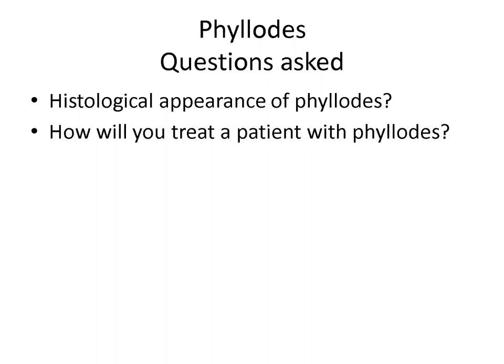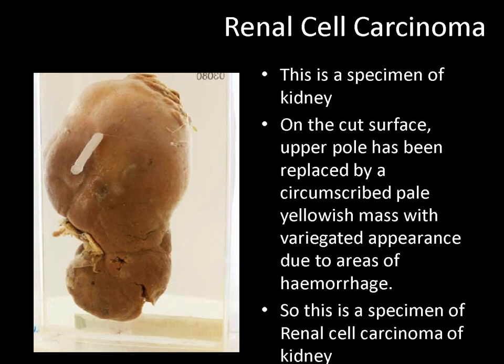The next question can be how will you treat a patient with phyllodes? The normal answer is wide local excision, that is excision of the tumor with a margin of normal tissue. However, in tumors which are huge and occupying almost all the breast, it may warrant a simple mastectomy. Also, a recurrent phyllodes which is large enough may require a simple mastectomy.